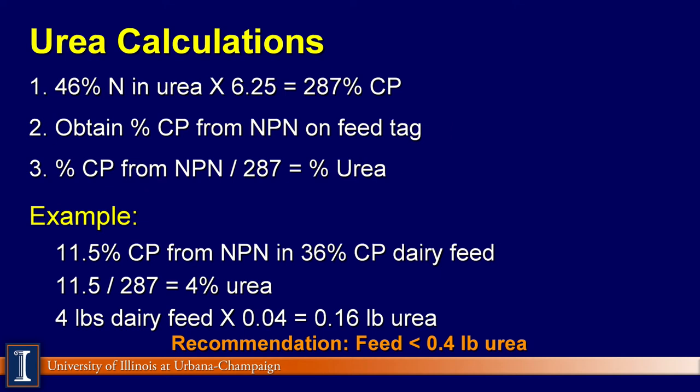Urea contains an equivalent of 287% crude protein. Yes, urea does contain more than 100% crude protein. Second, determine the amount of crude protein supplied in the feed from non-protein nitrogen on the feed tag. Third, divide the percent non-protein nitrogen on the feed tag by 287, which is the crude protein equivalent of urea, to determine the percent urea in the dairy feed.